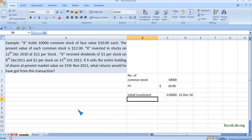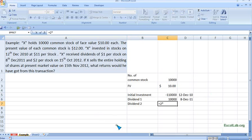Now he got dividend twice. Dividend 1, which is $1 per stock, so $1 multiplied by number of stock, which is 10,000. This is on 8th December 2011. Again he received dividend 2, and it is $2 per stock, so 2 multiplied by number of stock, and it is on 15th October 2012.